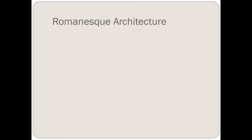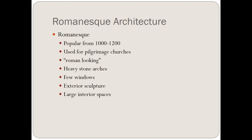I want to talk about the differences between Romanesque and Gothic architecture. Romanesque architecture was popular from around 1000 to 1200. In 1095, the Pope called for crusades from people in Western Europe to go to those Middle Eastern holy lands, and as a result Christians began to take pilgrimages to those sites as well as other sites in Europe that claimed special relics.